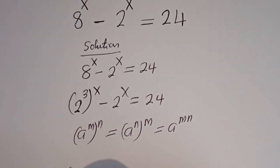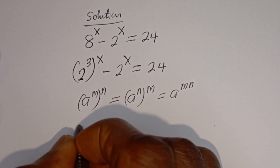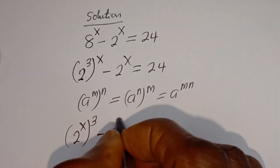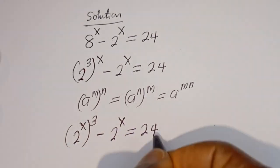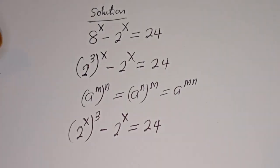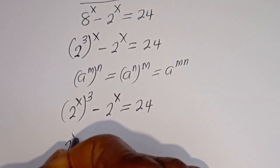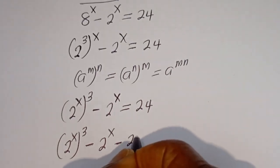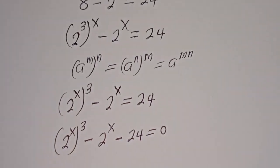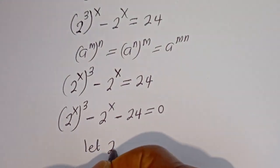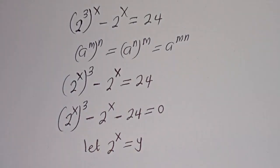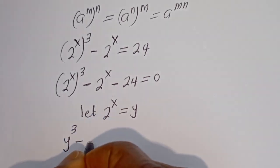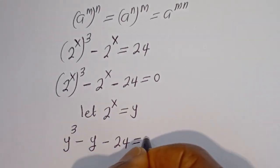Then this can be written as 2 to the power of x, to the power of 3, minus 2 to the power of x is equal to 24. Rearranging: 2 to the power of x, to the power of 3, minus 2 to the power of x, minus 24 is equal to 0. Let 2 to the power of x be equal to y.